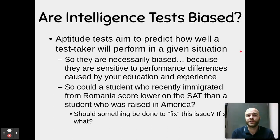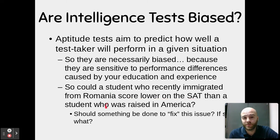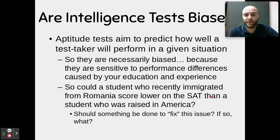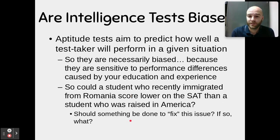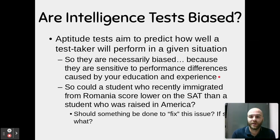Regarding bias in intelligence tests: aptitude tests aim to predict how well a test taker will perform in a given situation, but they are necessarily sensitive to differences caused by education and experience. For example, a student who recently immigrated from Romania might score lower on the SAT than an American-raised student, even if the Romanian student has a higher IQ, simply because they don't know the language, culture, or references. The question is how to make these tests reliable, valid, and fair for all people who take them.